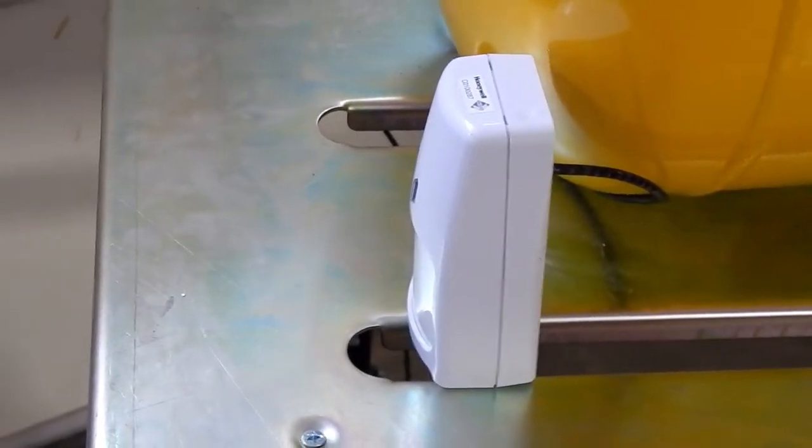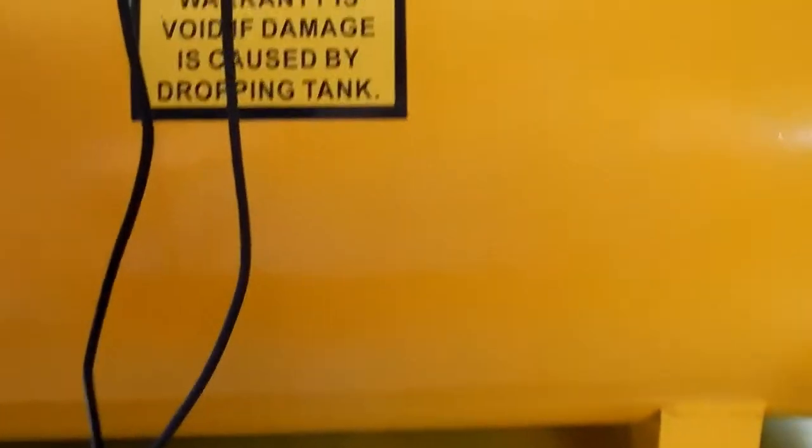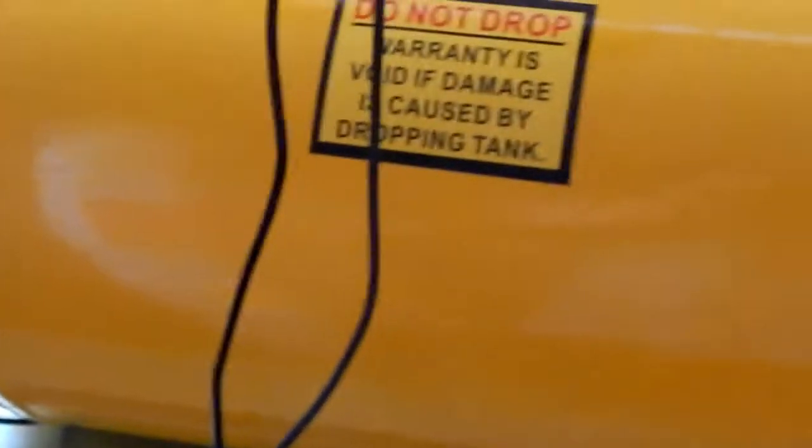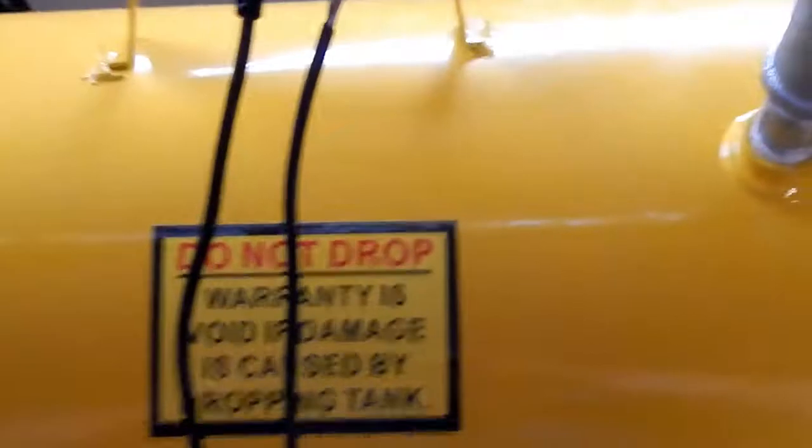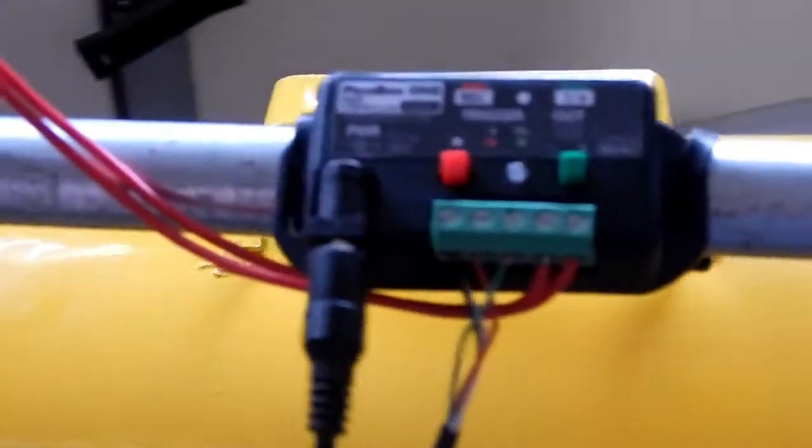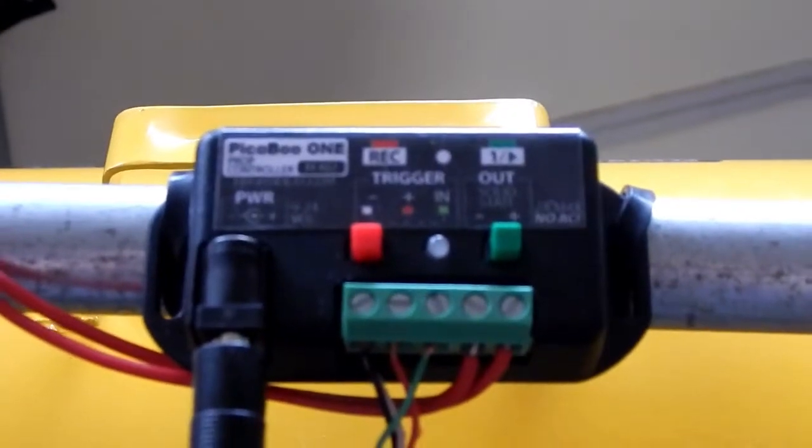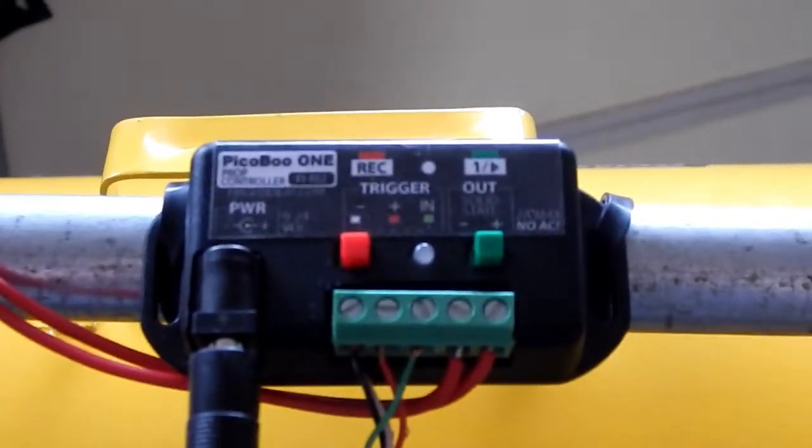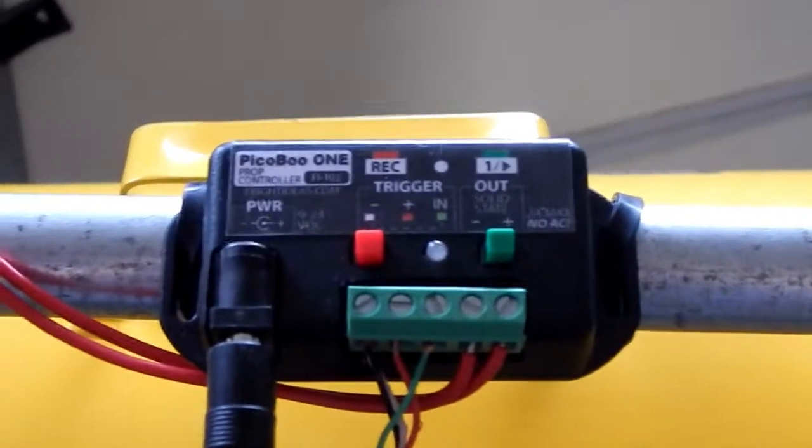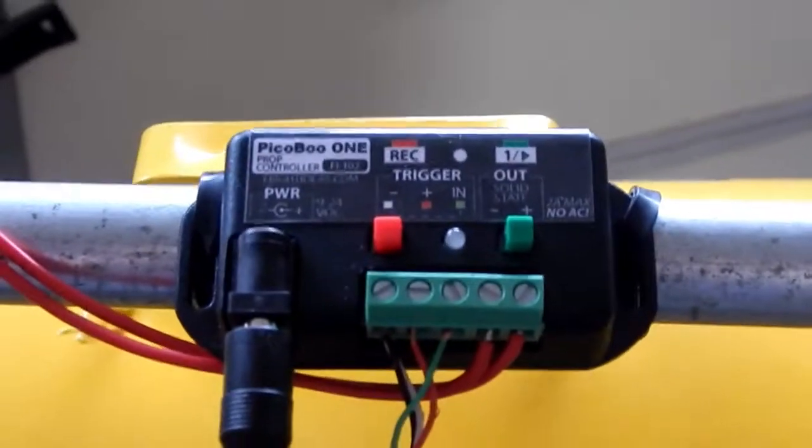That's your indication that the sensor is all warmed up and ready to go. It only takes a few minutes for that to warm up. Now we're going to go to the controller. As you can see, the green light is flashing there, and that's telling you the controller is in standby and ready to go.